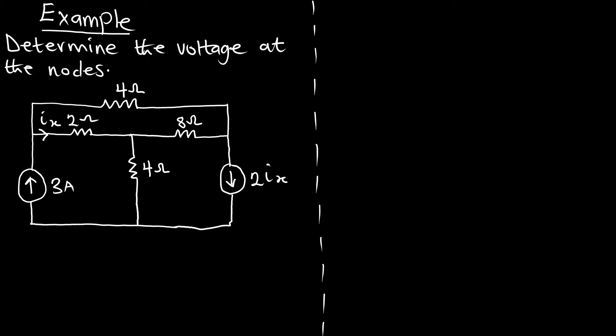Our first step is to identify the number of nodes we have in this circuit. We can see that we have node 2, node 3, and node 4 — so four nodes in total. Our first task is to find and select one of the nodes as our reference node. Out of the four, we are going to use one as the ground node. I'll prefer to ground this part as my reference node.